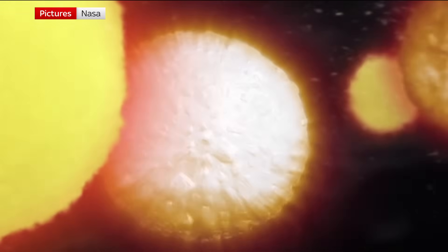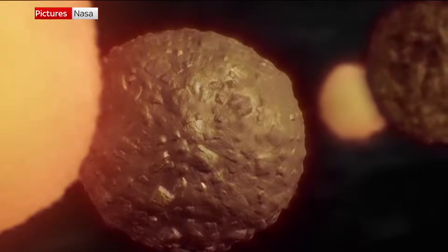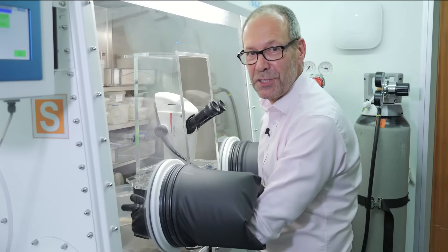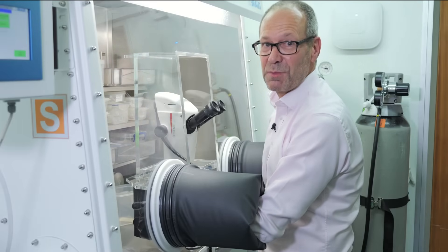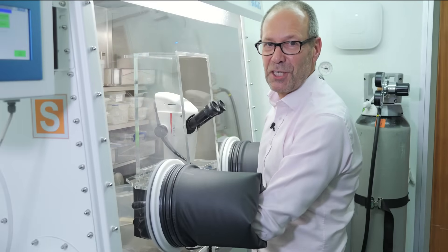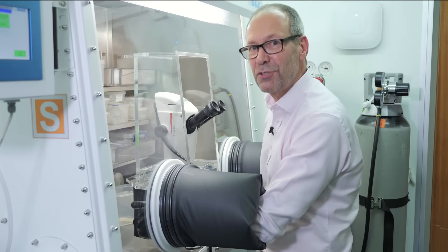It's precious because it is a window to the swirling gas and dust that formed not just asteroids, but planets. Asteroids like Bennu are a time capsule of conditions early in our solar system's history. Meteorites that crashed to Earth are contaminated as they come through the atmosphere.